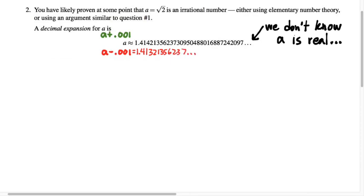So a minus 0.001 is this number whose decimal expansion differs only in that thousandths place from a, right, and it's 1 less. And a plus 0.001 is going to be the same, just with that thousandths place having increased by 1, 4, 1, 5, 2, 1, 3, 5, 6, 2, 3, 7, et cetera.